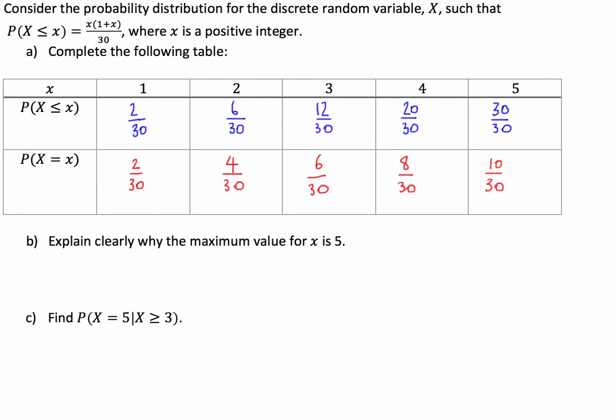For part b, explain clearly when the maximum value for x is 5. This is hopefully you guys are aware that the maximum probability that we can have when we're talking about probability density functions is 1. So the probability total of everything has to be equal to 1. So what we're going to say is, as the probability that x is less than or equal to 5 is equal to 30 over 30 which is equal to 1.